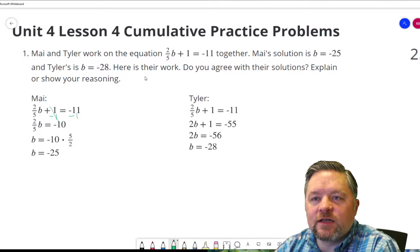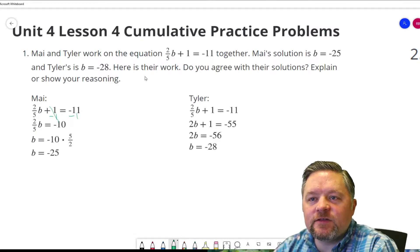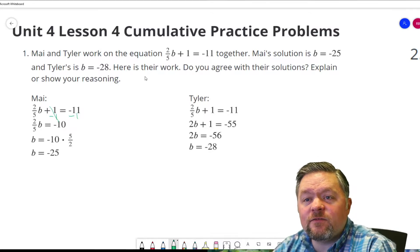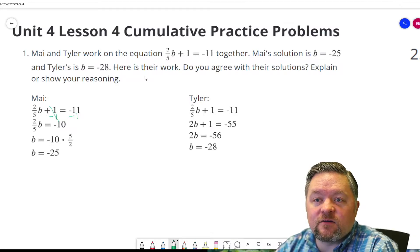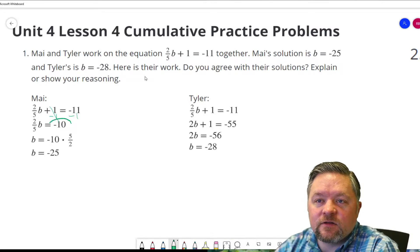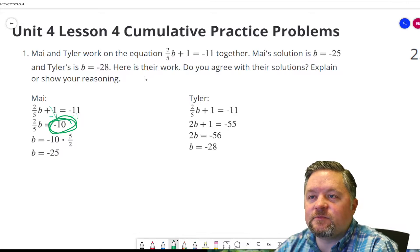Those would cancel. What's negative 11 subtract 1? Well, if we're 11 feet underground, we go down one more foot. We are not 10 feet underground, we're 12 feet underground. So that right there is a mistake.